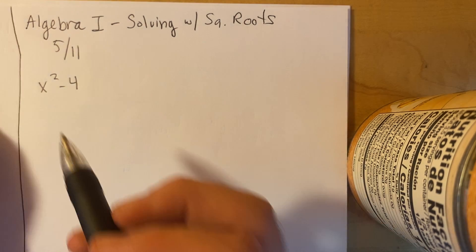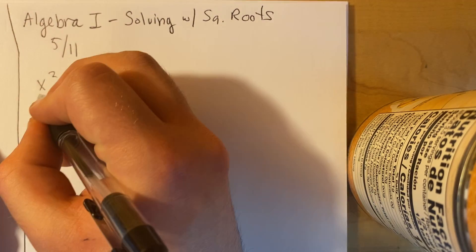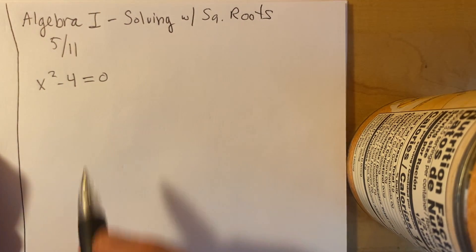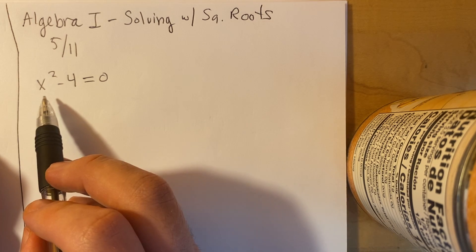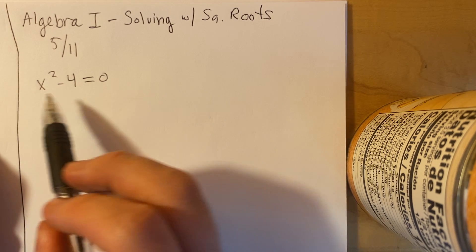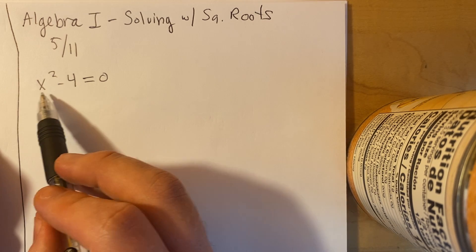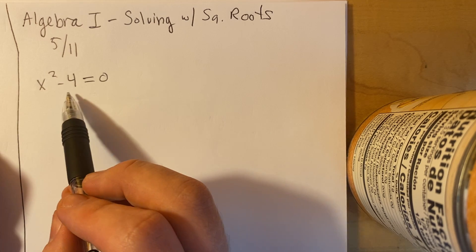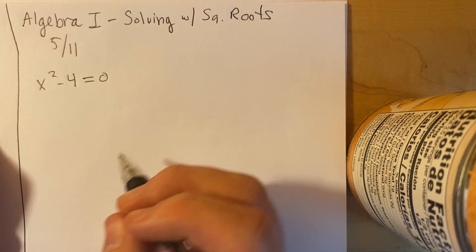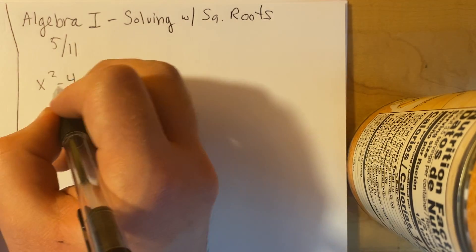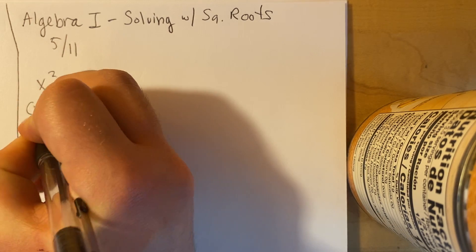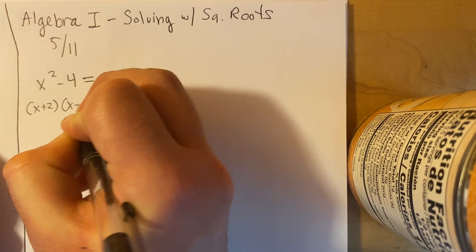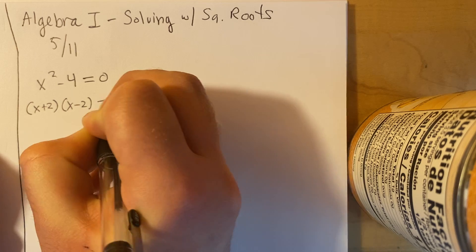Say you have this quadratic right here: x squared minus 4 equals 0. Before, how we know how to do this — we notice that this is a perfect square and this is a perfect square, so we can do a difference of squares. So we can factor this to (x plus 2)(x minus 2) equals 0.